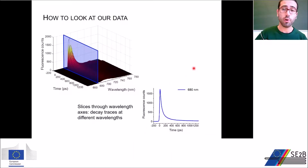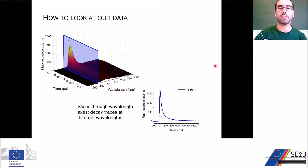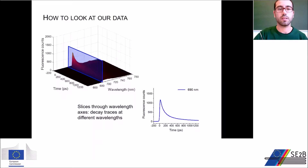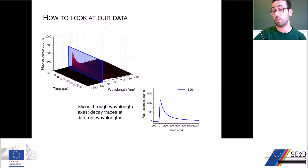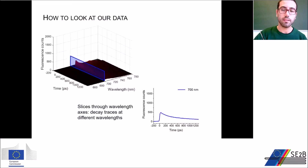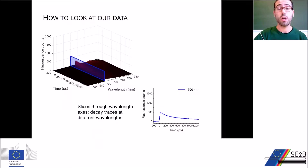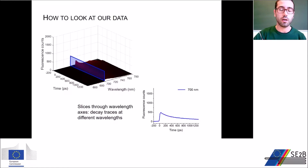For example, fluorescence emitted at 680 nanometers decays quite fast, whereas if we take a slice at 690 nanometers, fluorescence emission is lower, and it is even slower at 700 nanometers, which also starts from a lower level at time zero.